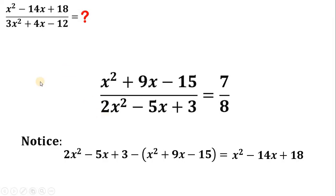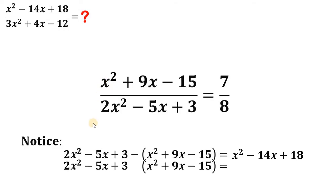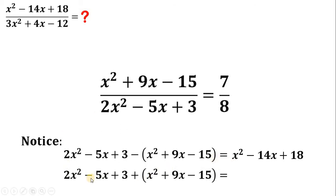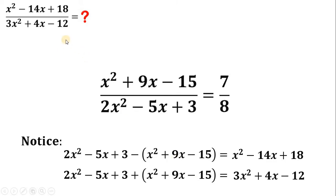Also, if we add the denominator and the numerator together: 2x squared plus x squared gives 3x squared; negative 5x plus 9x gives positive 4x; and 3 plus negative 15 gives negative 12. That is exactly the denominator of the expression that we want to evaluate.